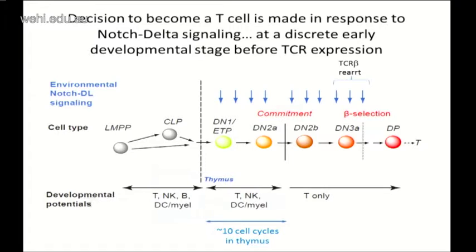The system that our lab works on is early T cell development, very close to the events that Professor Fisher was just telling you about. We're very interested in those 10 to 12 cell divisions between the time that uncommitted precursors enter the thymus and begin to be bombarded with signals from the notch signaling pathway in the microenvironment, and when they actually choose irreversibly to have a T cell fate. The T cell receptor beta rearrangements that Dr. Fisher was just telling you about occur here for the most part, but the events I'm going to talk about are the ones which really set the cell up for making those T cell receptor rearrangements only in the context of a committed T cell fate, plus a large enough clone size so that selection events can occur without wiping out the entire population.